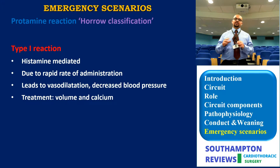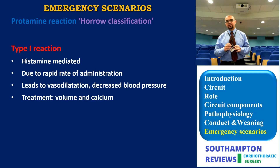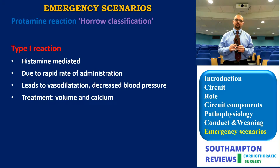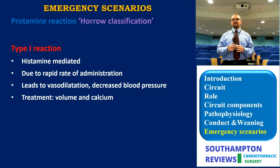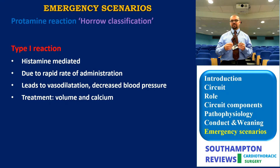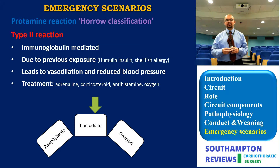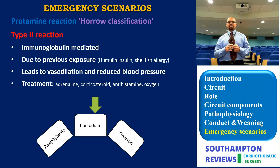For protamine reaction, the key is understanding which type of reaction is occurring - there is the Hore classification. Type 1 reaction is histamine-mediated, due to rapid administration of protamine. It is the least severe of the three reactions, manifesting as vasodilation and decreased blood pressure. Volume transfusion and calcium usually help with this, and slowing administration is advised.